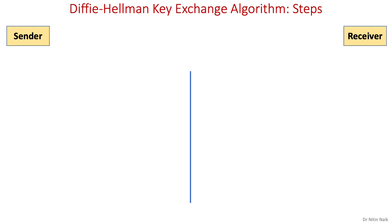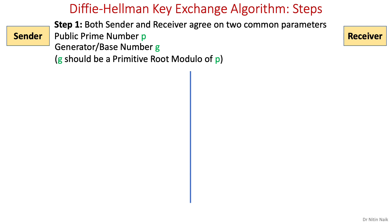We'll explain this algorithm in four steps. The prerequisite for Diffie-Hellman key exchange algorithm is a basic understanding of modular arithmetic, which I've explained in the modular arithmetic video series. In step one, both sender and receiver mutually decide upon two public numbers to start the computation. The first number is a public prime number p and the second number is a generator or base number g, where g should be a primitive root modulo of p. I've already explained primitive root modulo in another video.